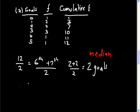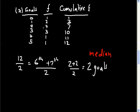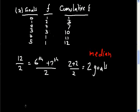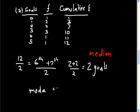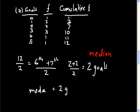The mode is the value with the highest frequency, which is two goals, as it has a frequency of four — the most in the table.